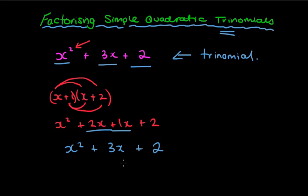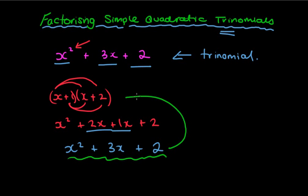So it's still a quadratic, but it's just become a quadratic trinomial. If you have a look at the top part, hopefully you see that they're the same. So the whole idea of factorising a quadratic trinomial will be the reverse of expanding the brackets. You'll be given the expanded form, such as x squared plus 3x plus 2, and you'll want to put it back into bracket form: x plus 1, x plus 2.